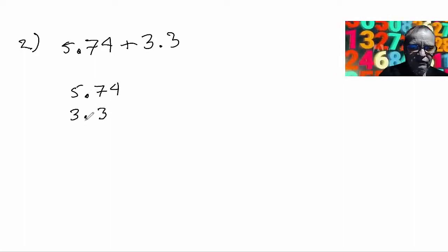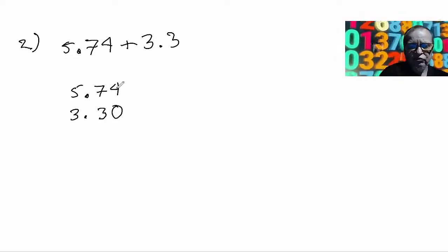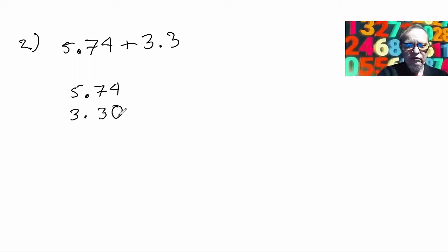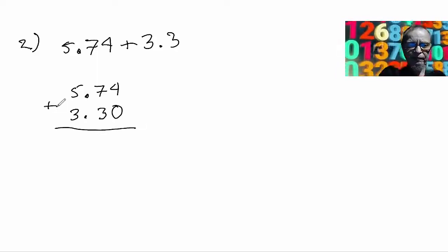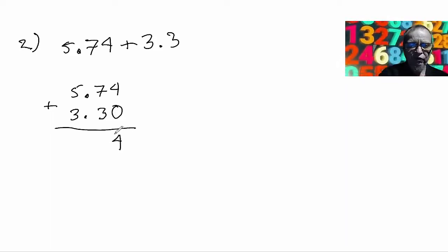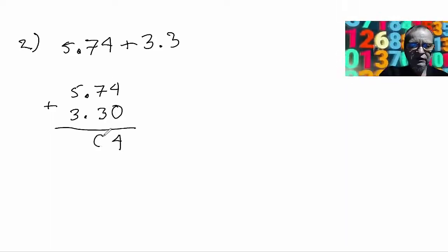See how the decimals are lined up? I'll put a 0 in the hundredths column here to just keep everything in order so we can see clearly what we're adding. So we have 4 plus 0 is 4. 7 plus 3 is 10.